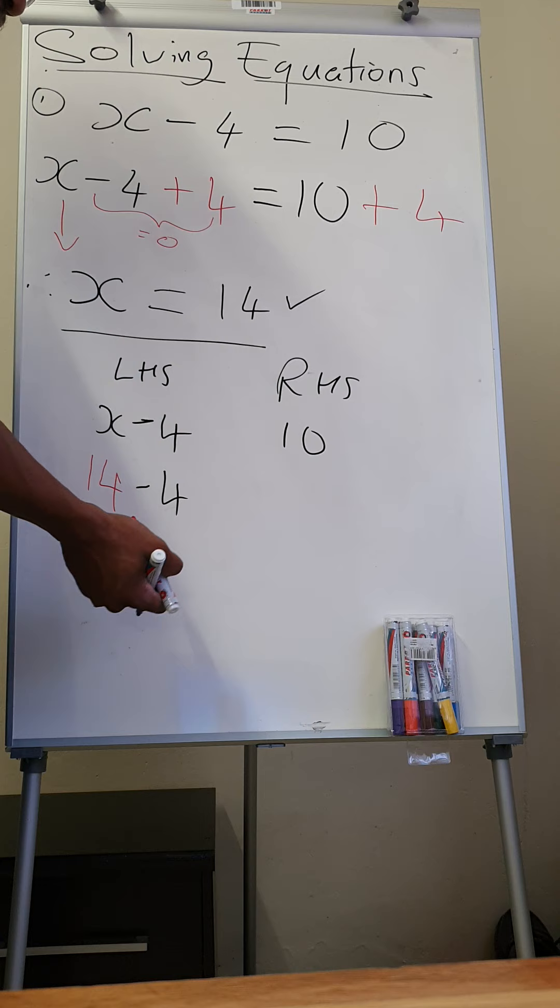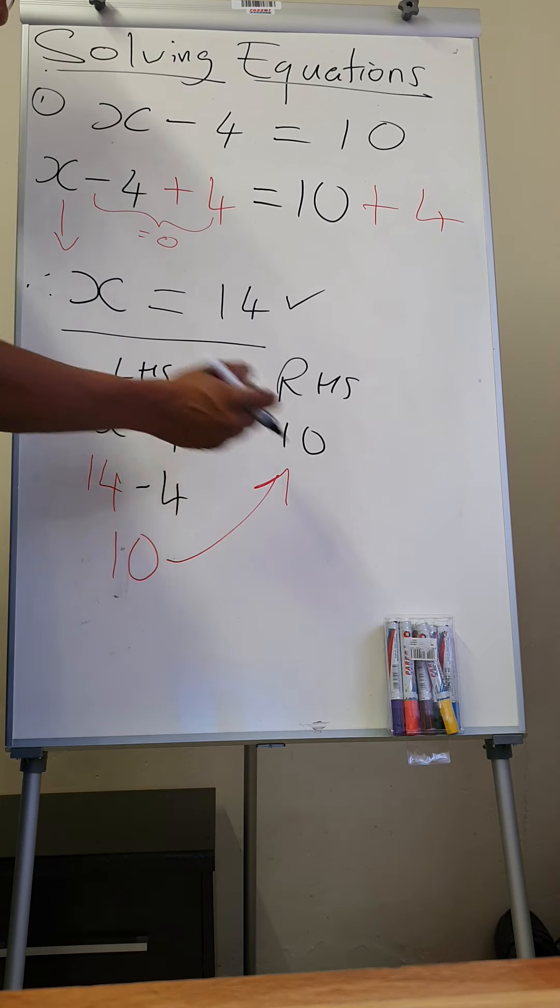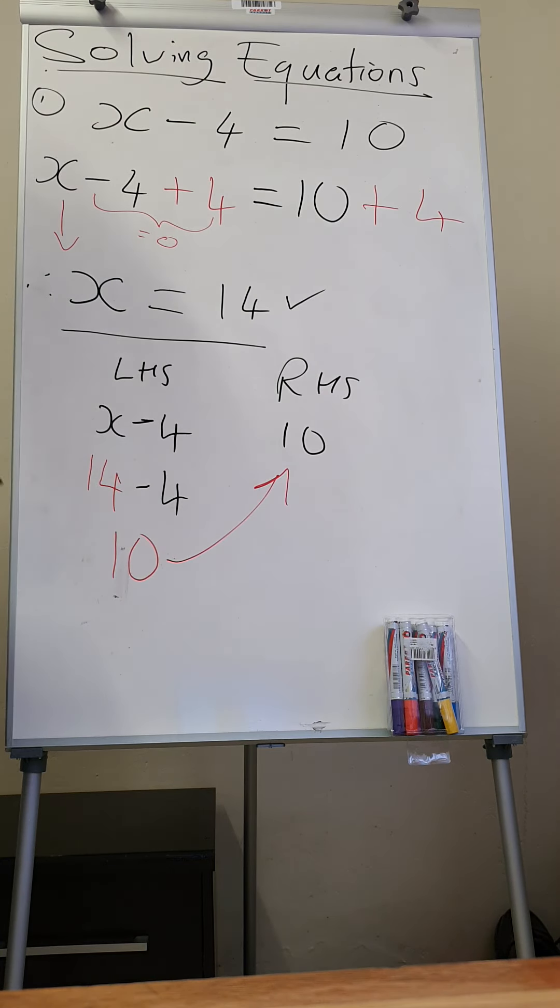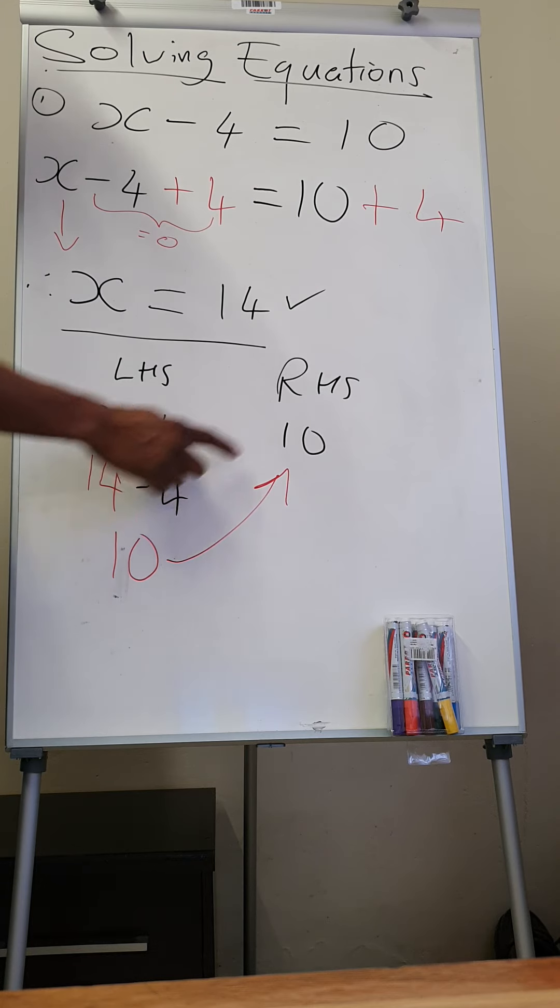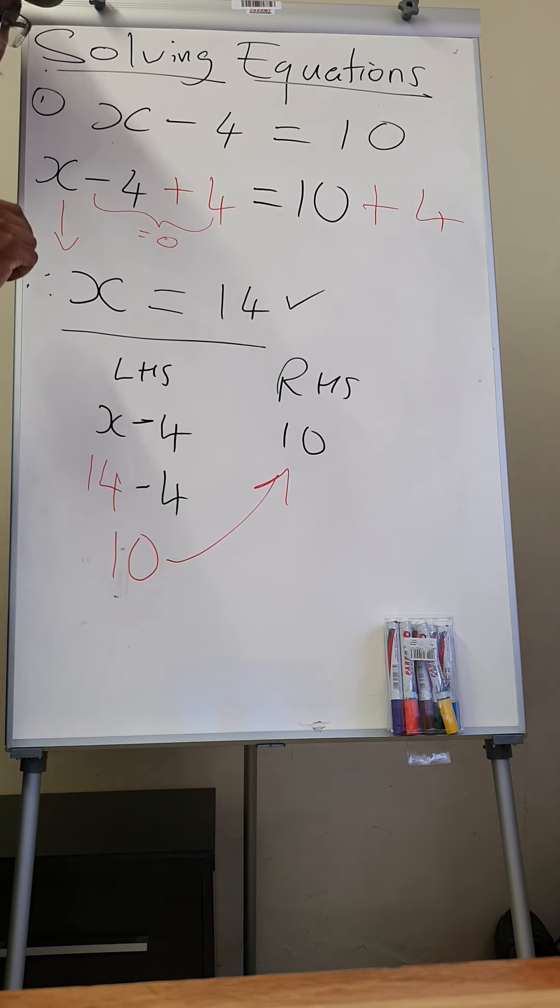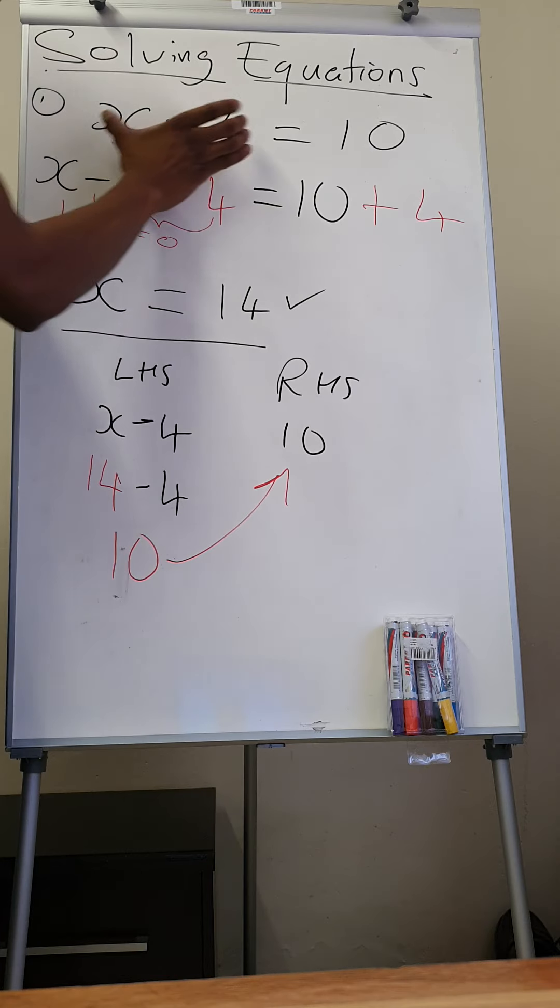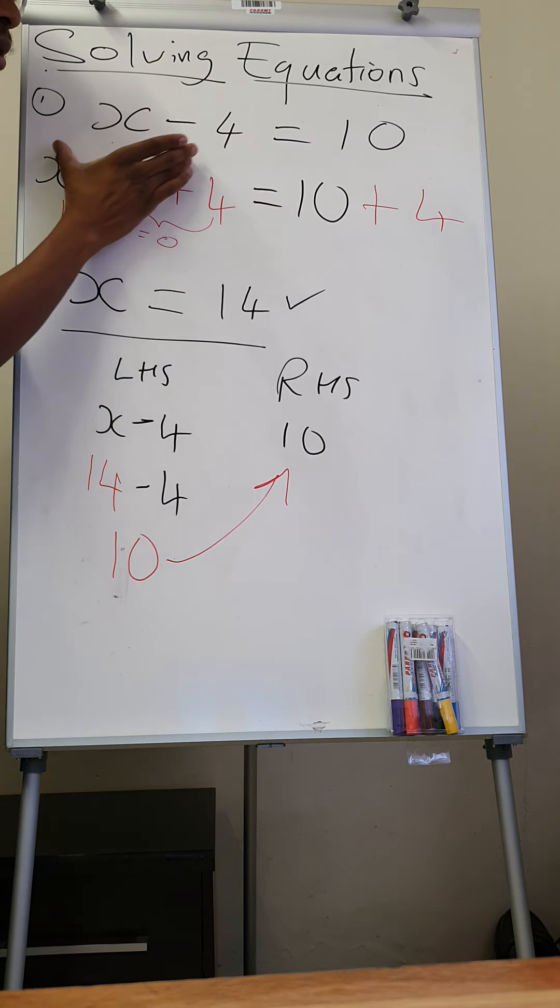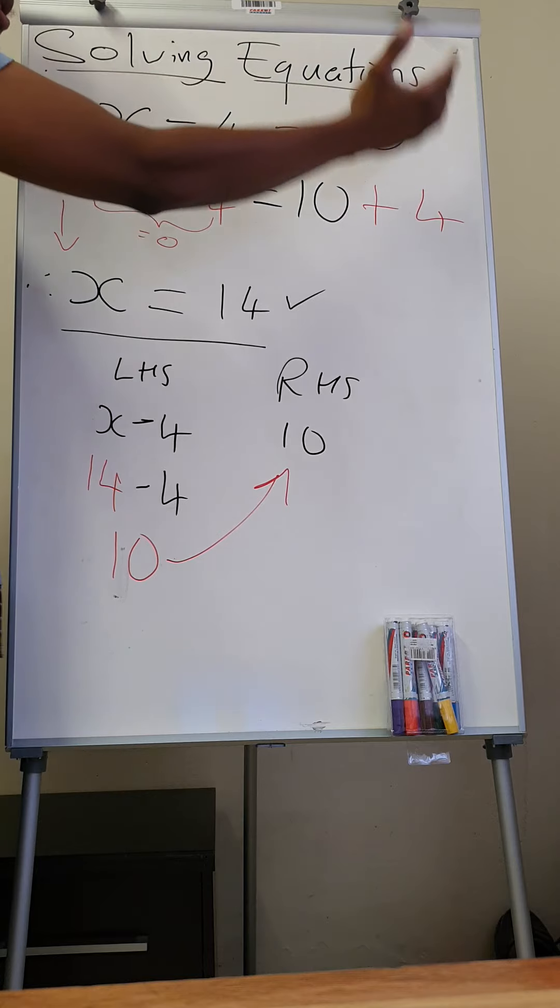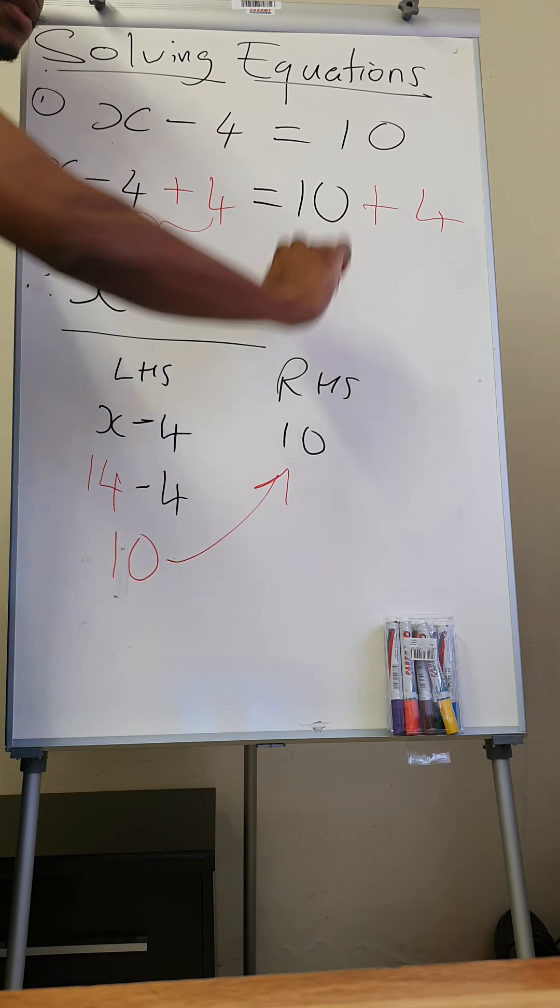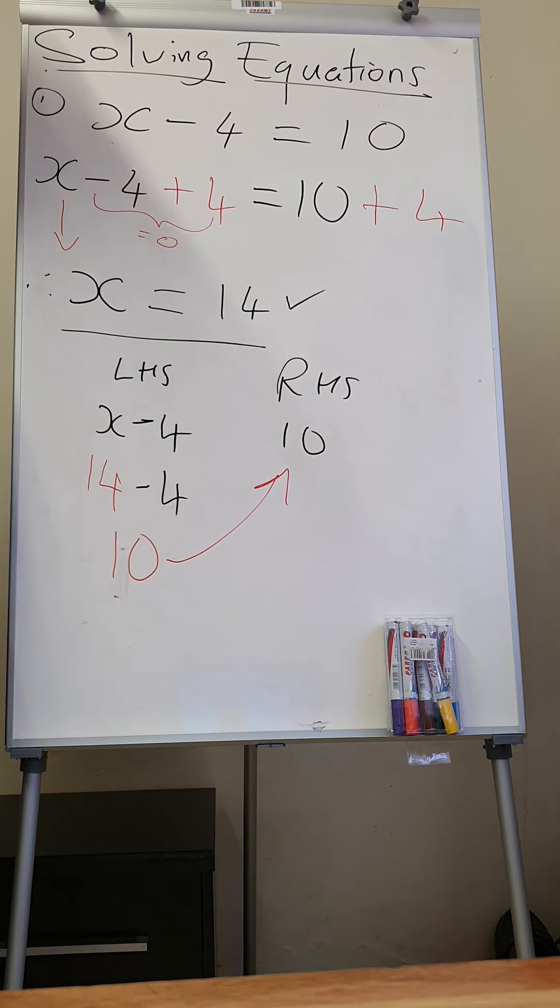So that in red gives me 10. That is the same as the right-hand side. So it means our value of x here was correct. If x is 14, then 14 minus 4 gives us 10. So it means always, the equations will always be balanced. What you have on your left-hand side of the equation will always be equal to whatever is on your right-hand side of the equation.